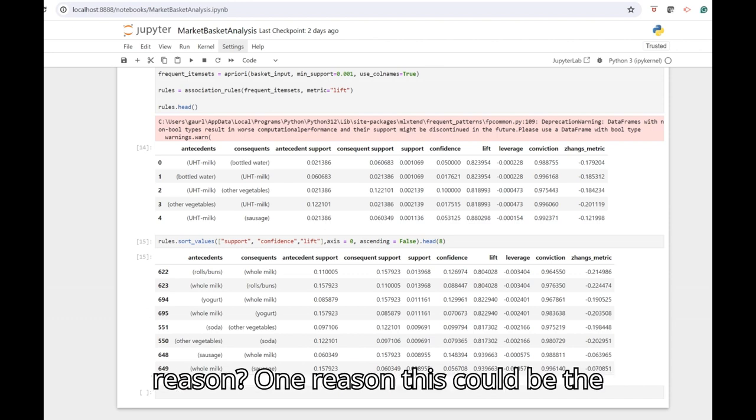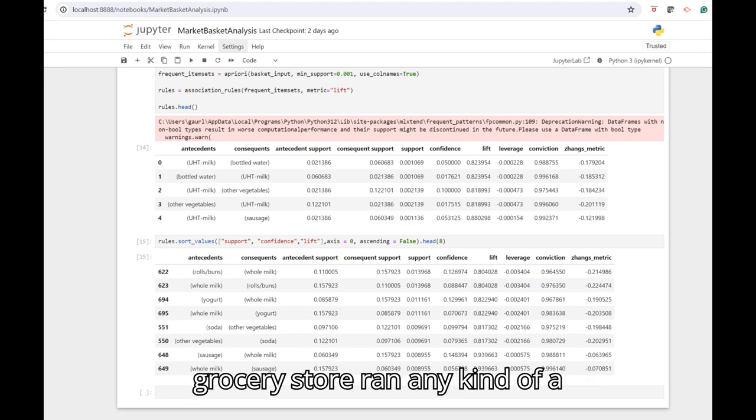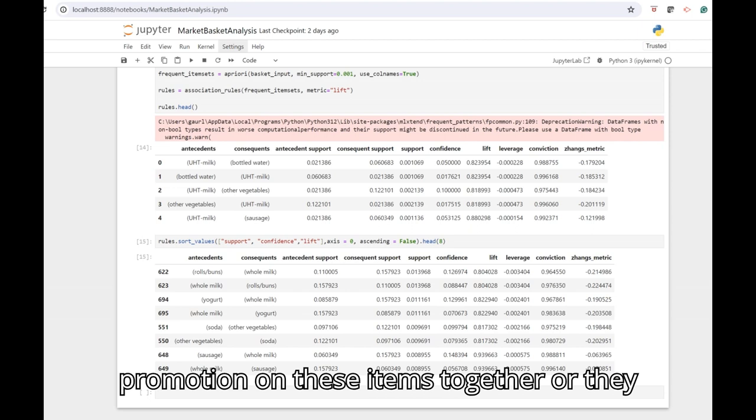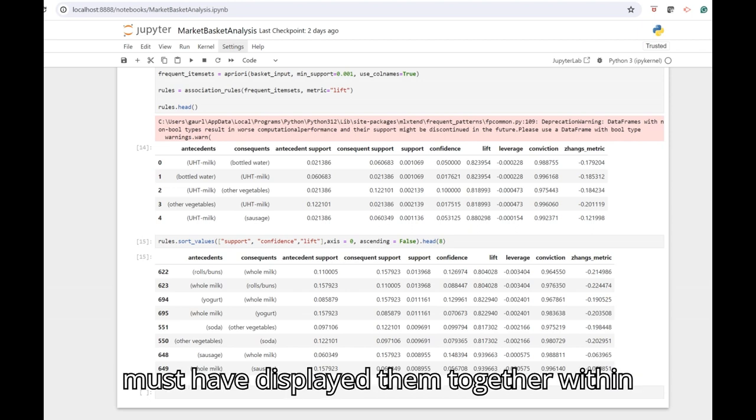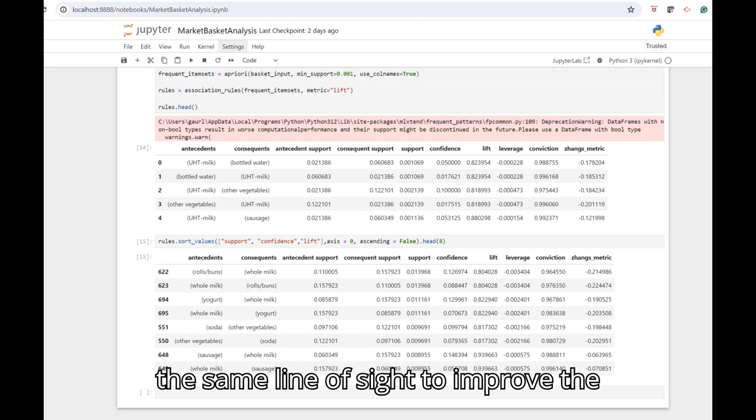Now what can be the reason? One reason could be the grocery store ran any kind of promotion on these items together, or they must have displayed them together within the same line of sight to improve the sales. This can be the reason.